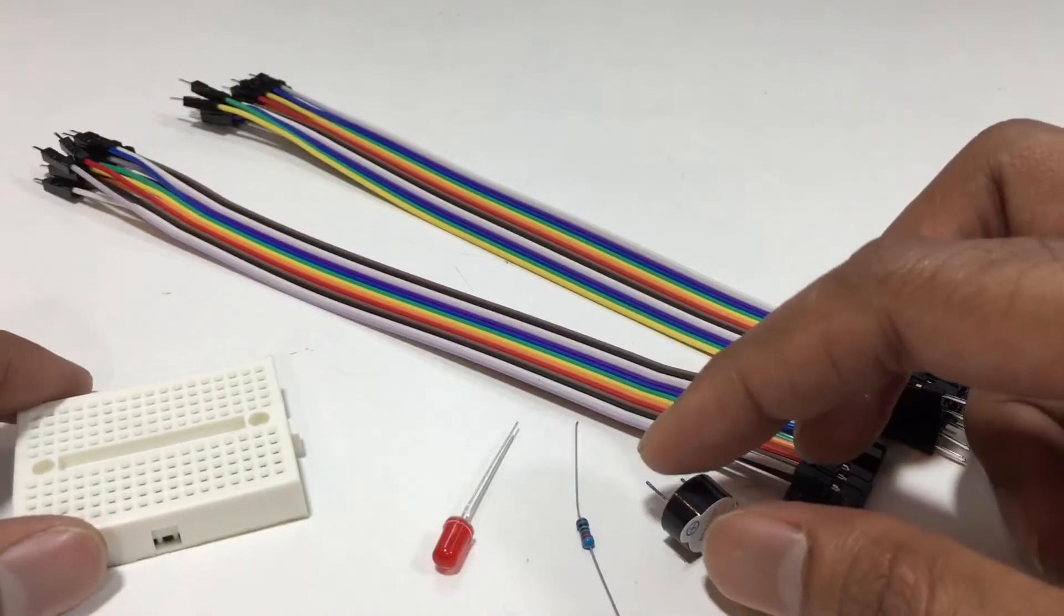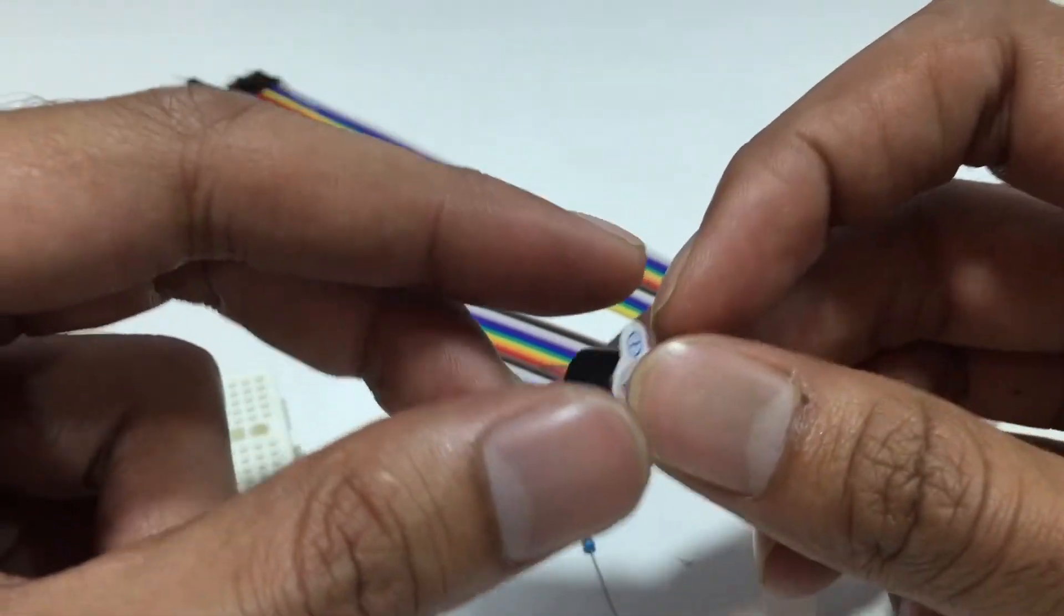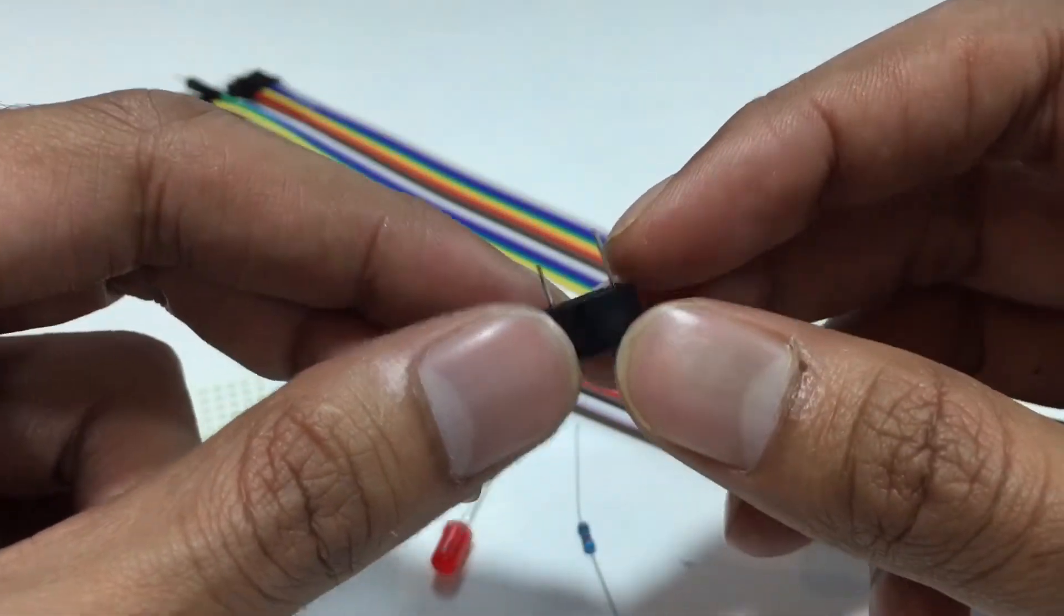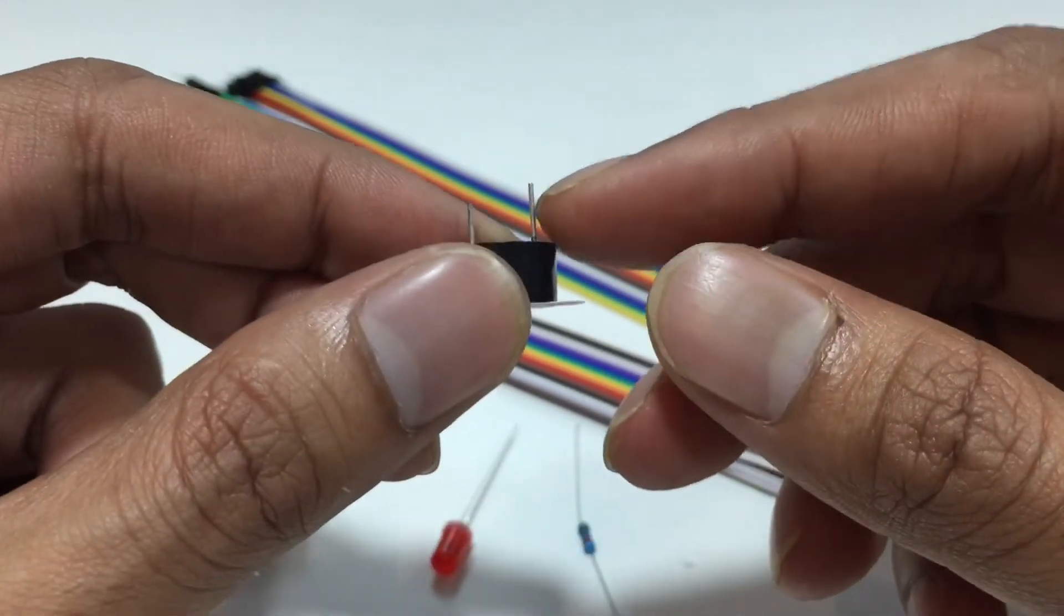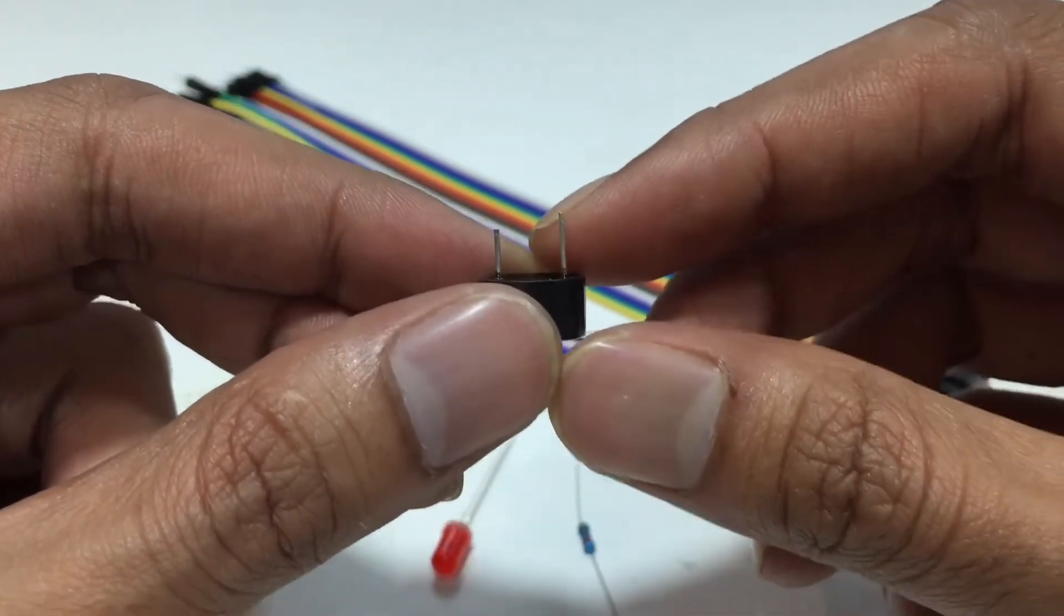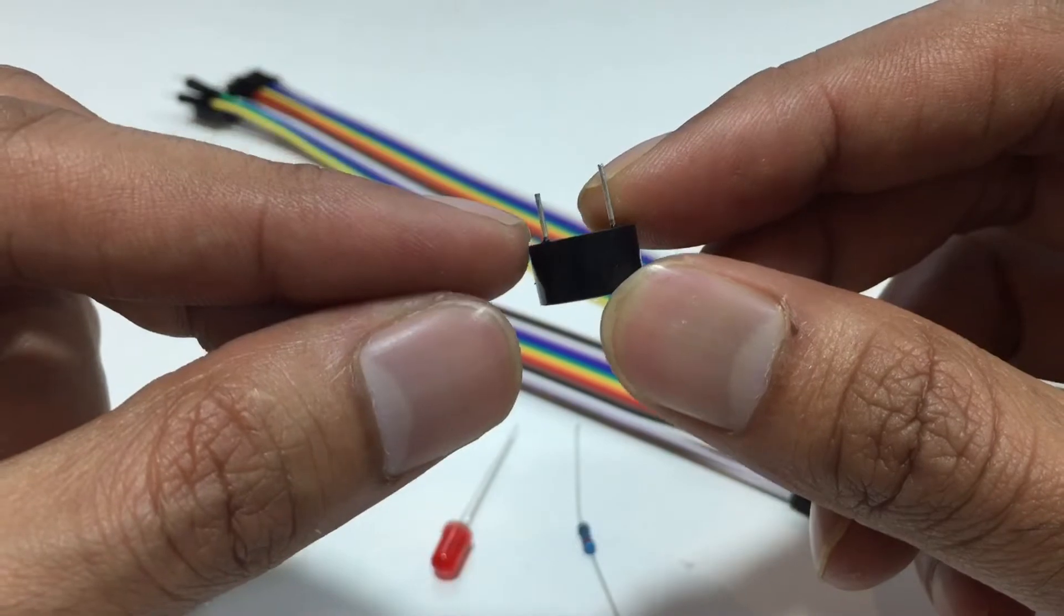Then we need a buzzer. This is 5 volt buzzer. This long leg is positive terminal and this short leg is negative terminal.